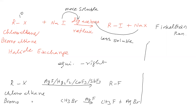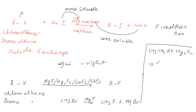Another example: we take ethyl chloride CH3CH2Cl and treat it with Mercurous Fluoride HgF2. We get ethyl fluoride CH3CH2F, plus HgCl2. That means halogen is getting exchanged — Cl comes out, Fluorine comes in. This is halide exchange.